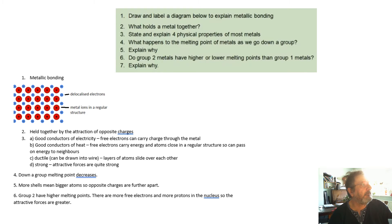Metallic bonding. There's a diagram. You've got your delocalized electrons. You've got your metal ions in a regular structure. It's held together by the attraction of the opposite charges. Metals are good conductors of electricity, because an electrical current is the flow of charge, and the free electrons can move through the wire carrying charge.